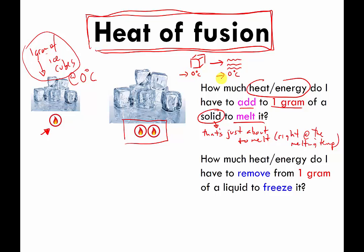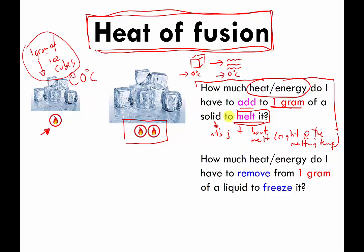Heat of fusion, just to emphasize: it's how much energy you need to add to one gram of some solid that's just about to melt in order to melt it. It'll be a different amount of energy for different materials. For water, it's a certain amount of energy for every one gram of solid water just about to melt. For aluminum, it'll be a different amount. For gold, something different.